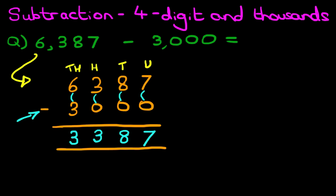And we have our answer. 6,387 minus 3,000 is 3,000, comma, 387. That is correct. Let's give it a nice big tick.